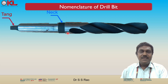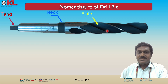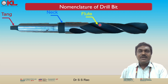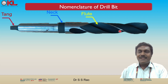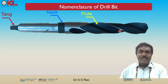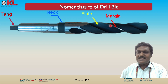Next is the flute. On the surface of the body, the cut portion is called the flute. The flutes are the deep spiral or helical grooves that run along the body of the drill bit. Their primary function is to provide channels for removing material while drilling, allowing for efficient chip evacuation and preventing overheating.